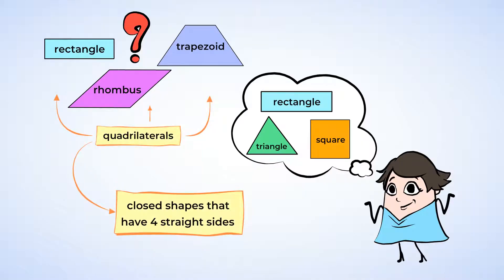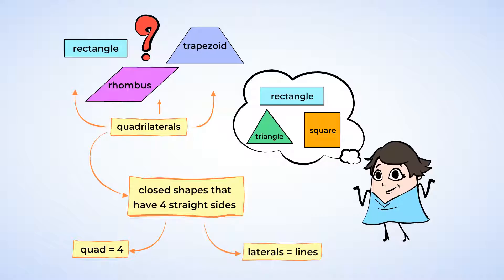Quadrilaterals are closed shapes that have four straight sides. It's in its name. Quad means four, and laterals are lines. And rectangles are only one type of quadrilateral.